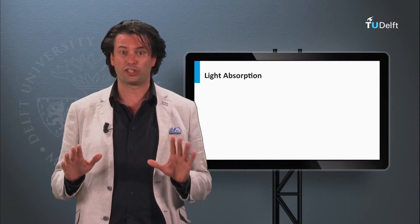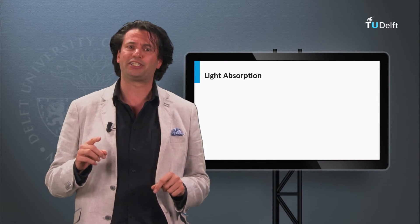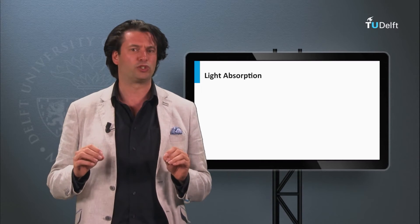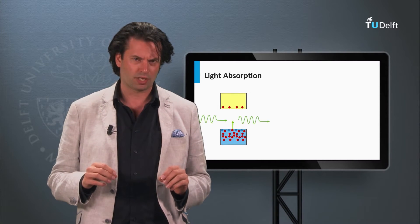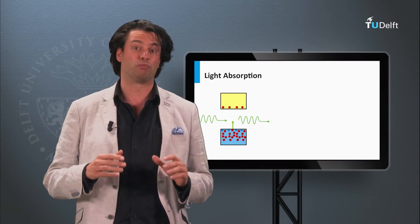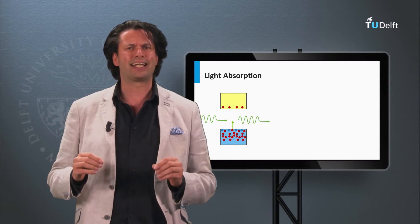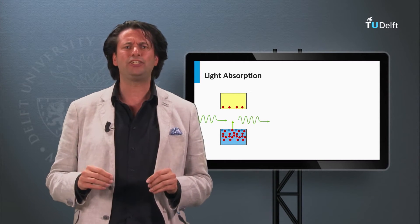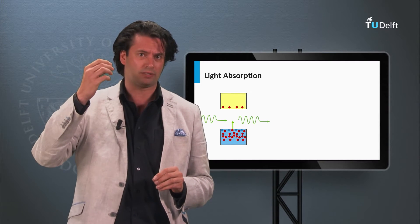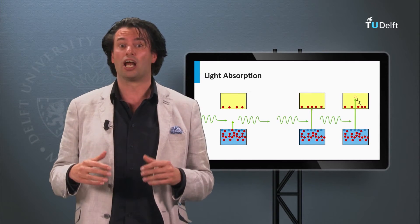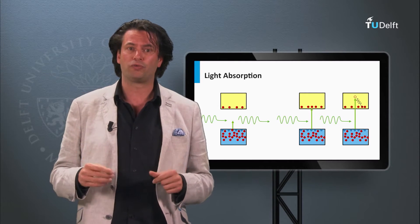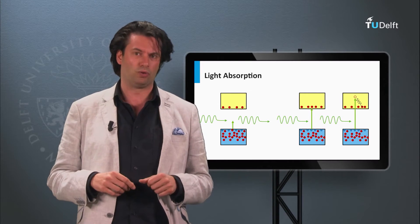Let's consider a single junction solar cell in which the absorber layer is a material with a certain bandgap energy. We know that when the energy of a photon is smaller than the bandgap, it is lacking the energy to excite an electron to the conduction band. When the energy is larger than the bandgap, absorption of the photon results in a mobile electron and hole.